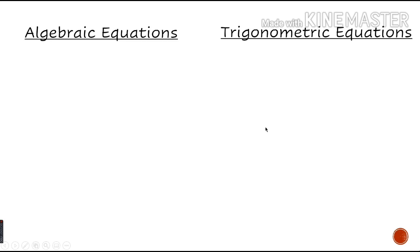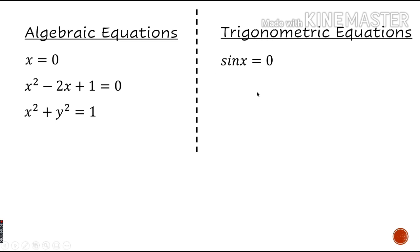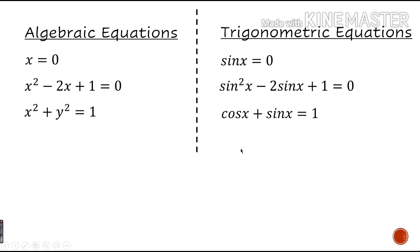Now let's talk about equations — algebraic equations and trigonometric equations. All of you are familiar with algebraic equations like x equal to 0, x squared minus 2x plus 1 equal to 0, and x squared plus y squared equal to 1. Note that an equation like sin squared x plus cos squared x equal to 1 is an identity, satisfied by all values of x, whereas trigonometric equations are satisfied only by particular values of x.